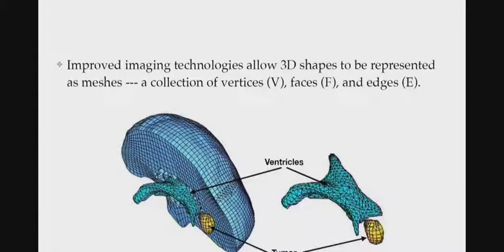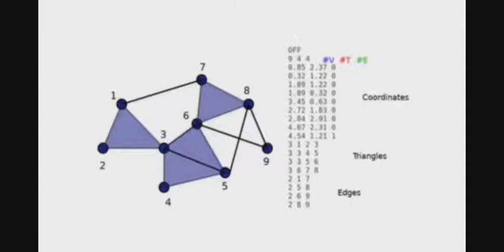What do the data look like? If I look at some of these data, I get these 3D meshes. You get faces, vertices, and edges. This is, for example, a tumor, these are ventricles, this is a brain. If I look at it more carefully, this is called an off file. I have a collection of points in three space, and I tell you where the vertices, edges, and faces are. These are my data.